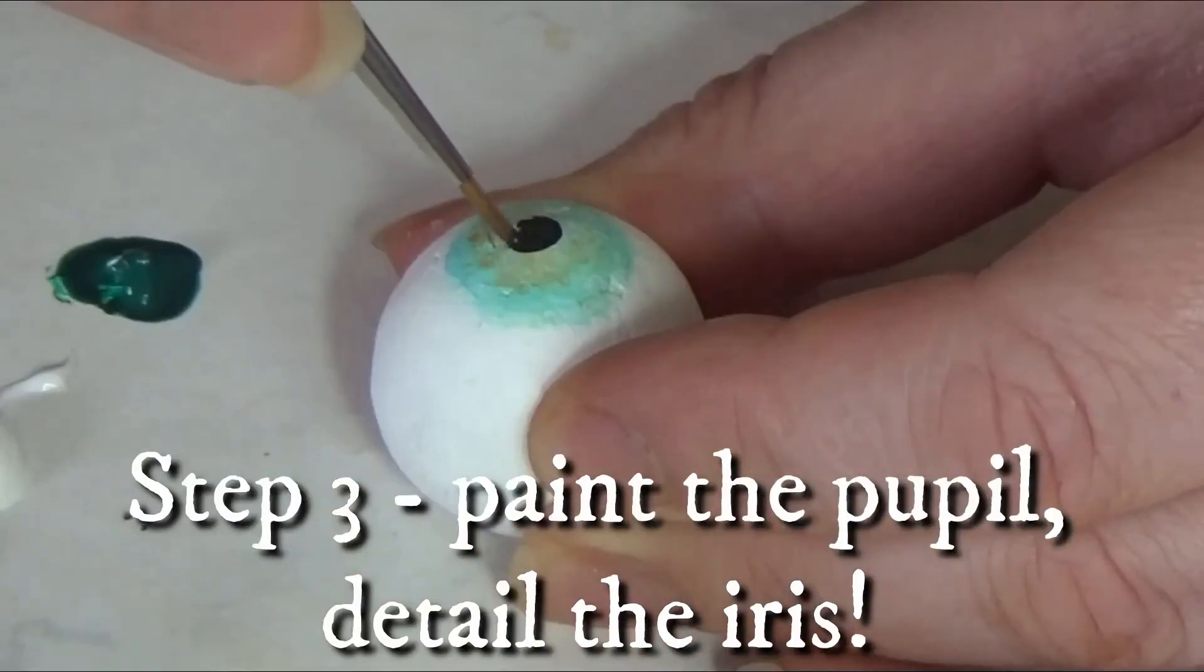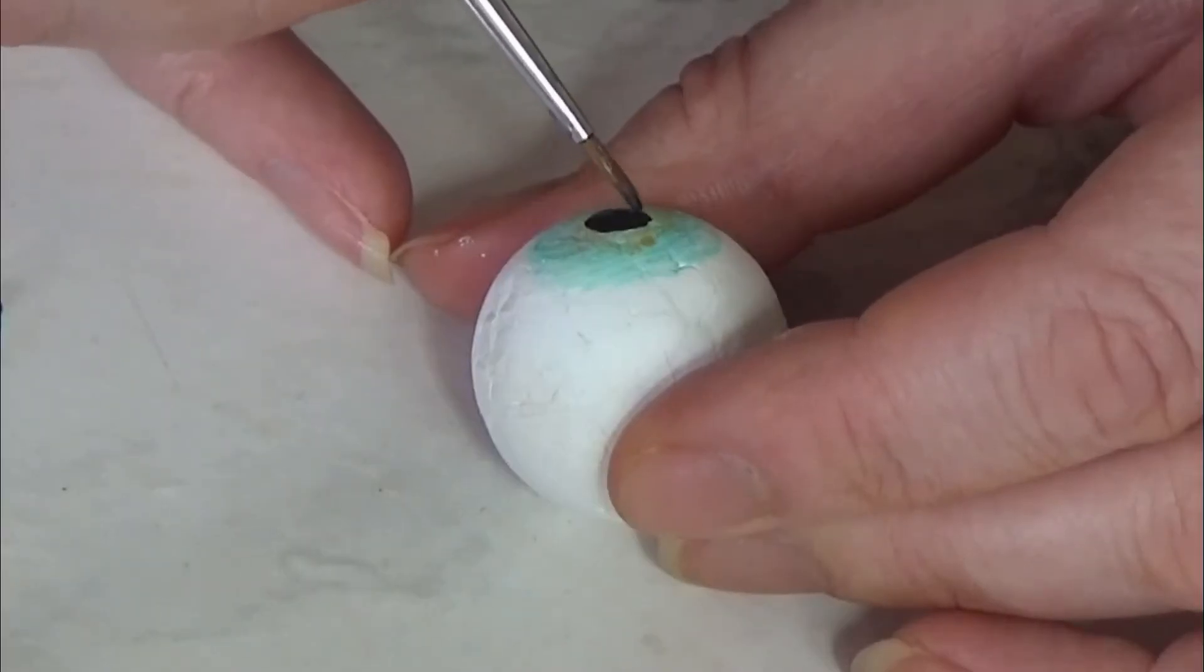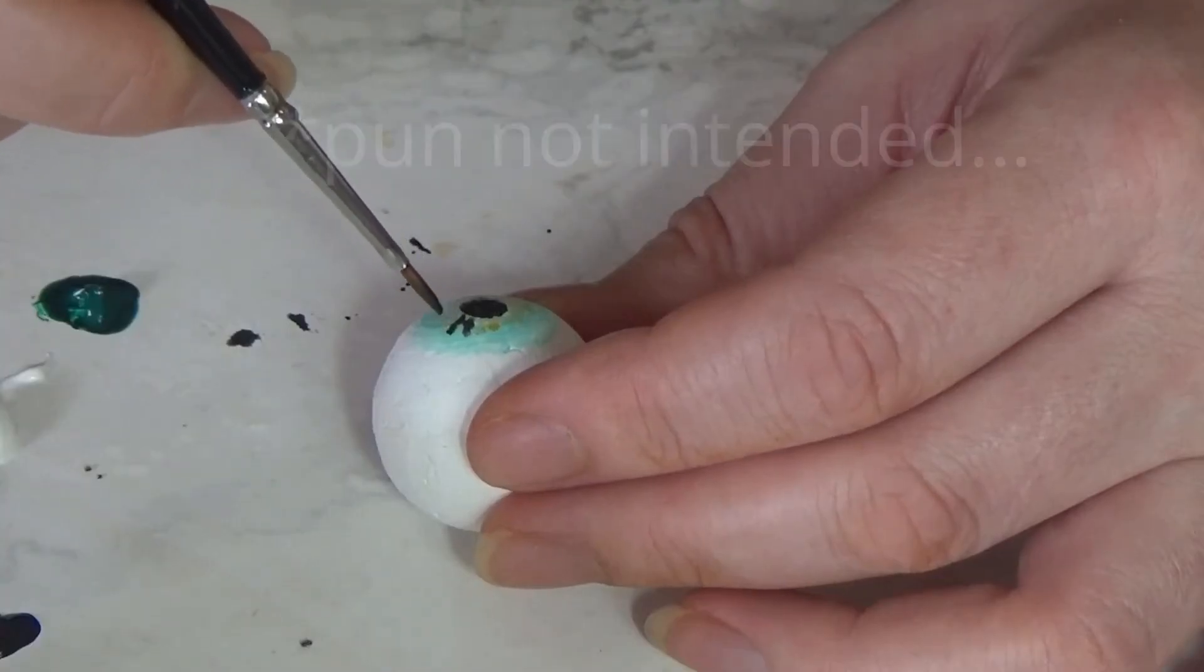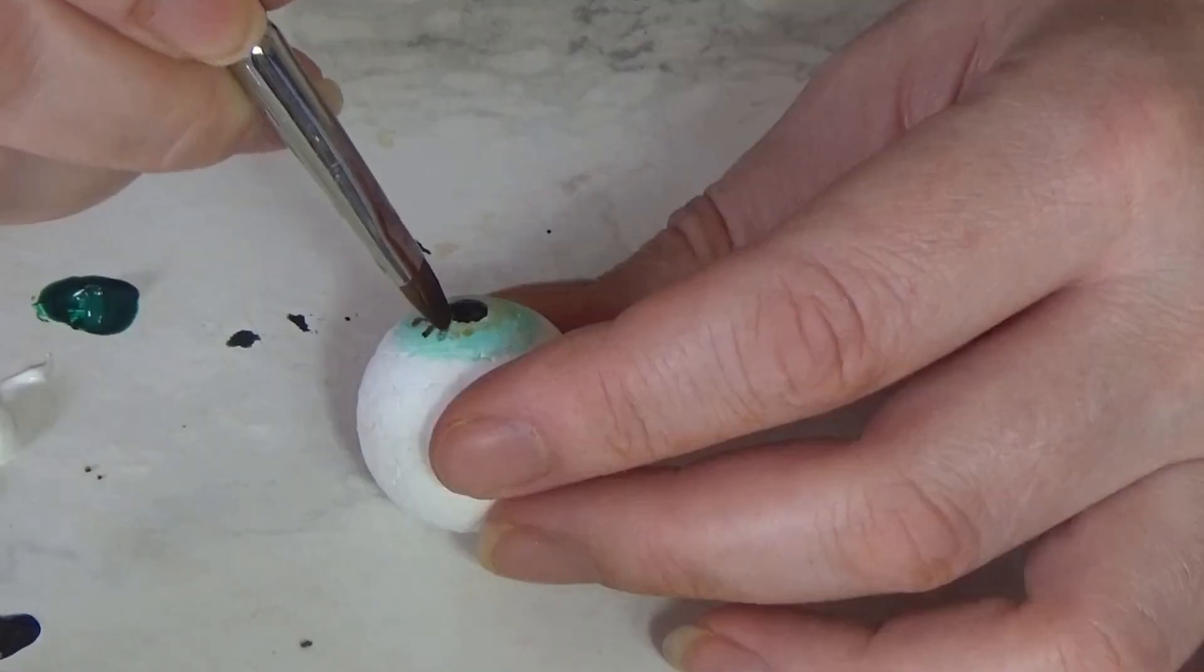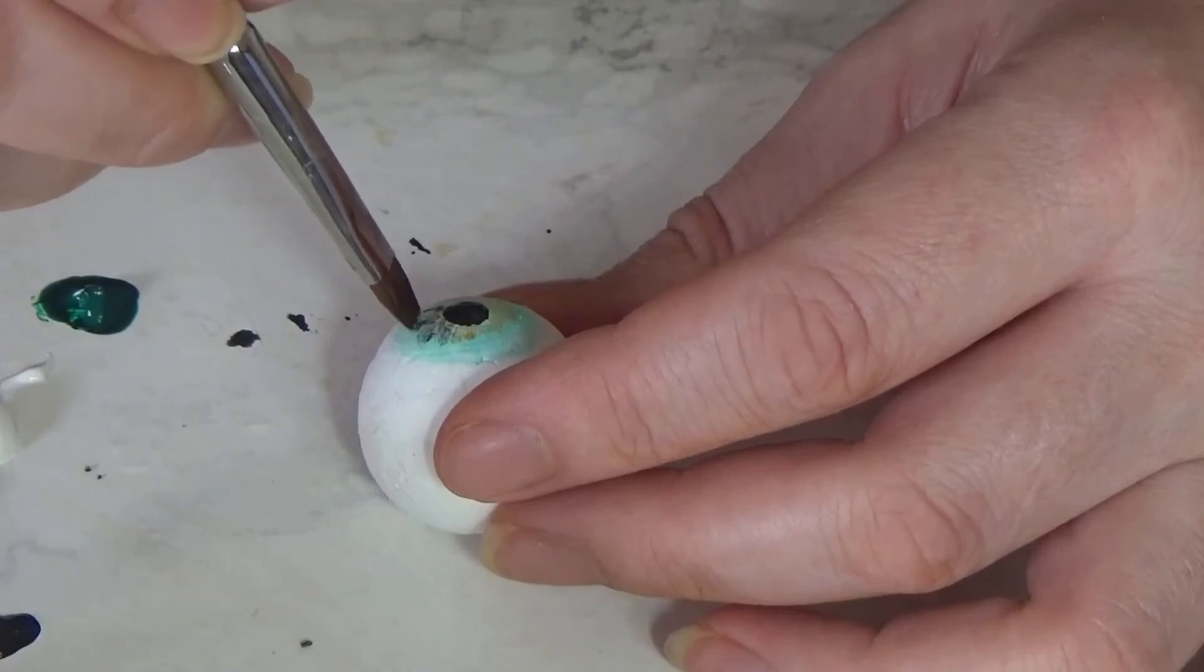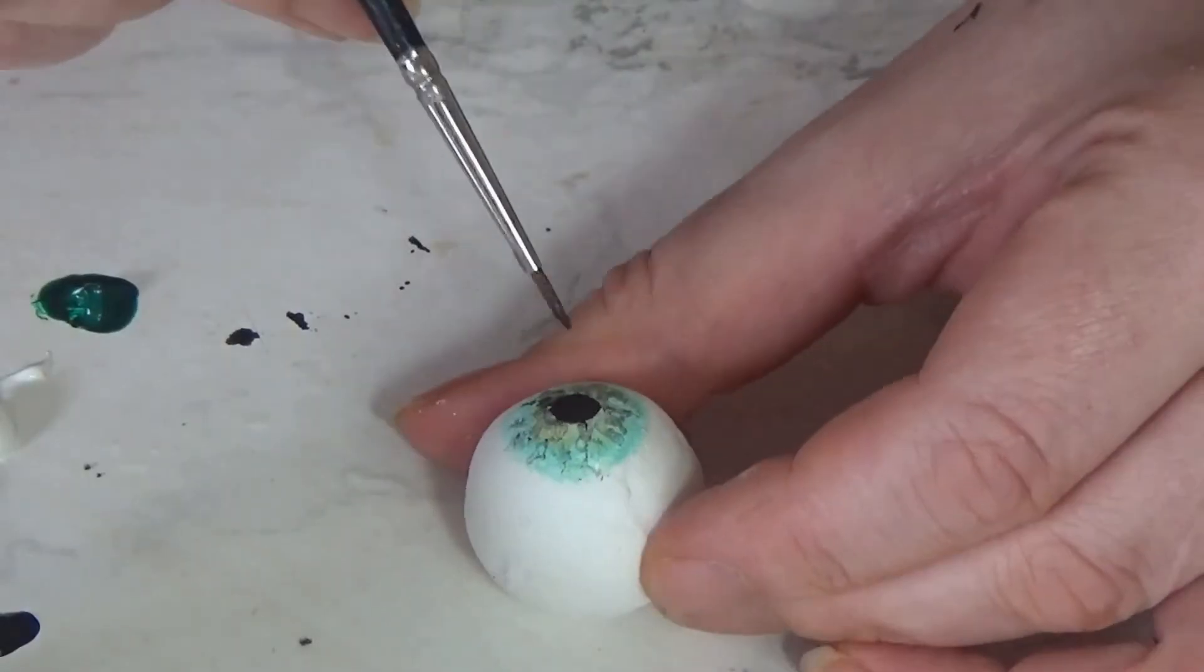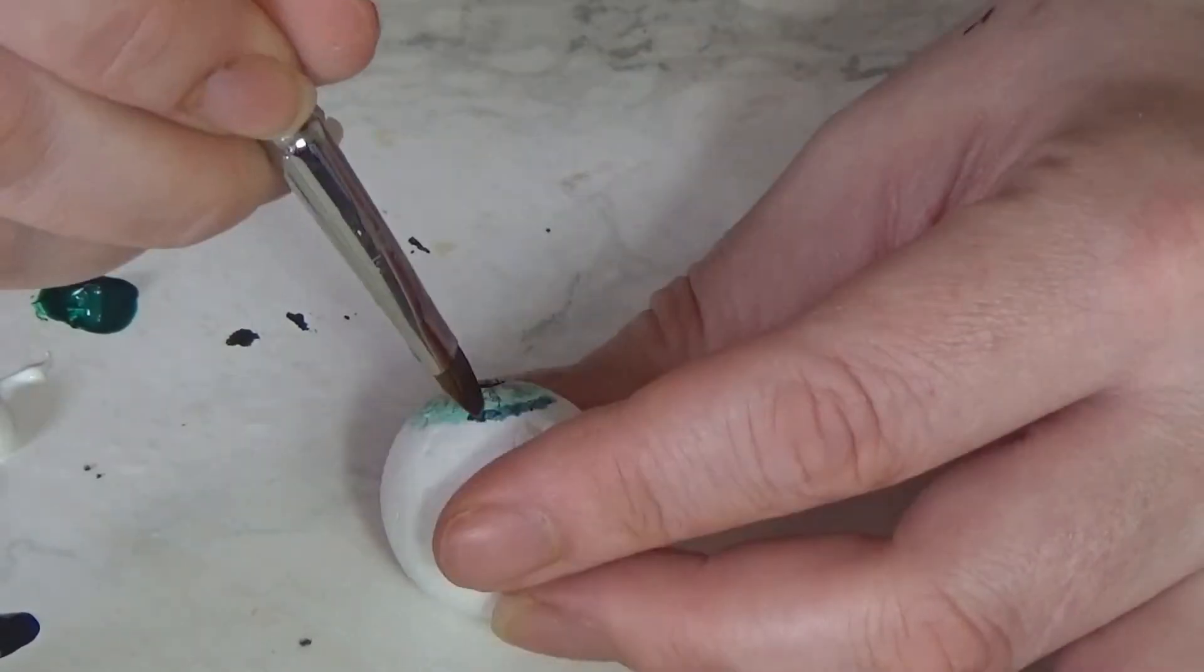Once you're happy with the initial colors on your iris, step three is to add the pupil. This gives a focal point to your eye. Don't worry, we will be adding some more color detail later. So I just added a black circle for the pupil and then some black little strands going out from the eye and then just blended them with my finger.